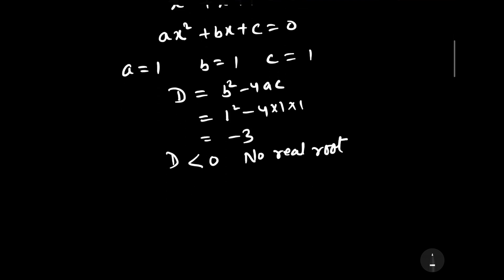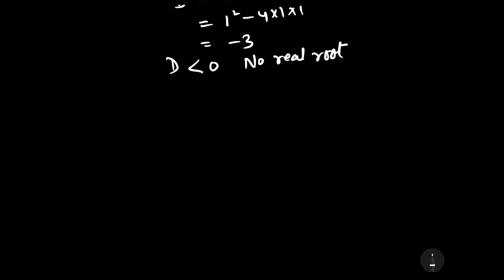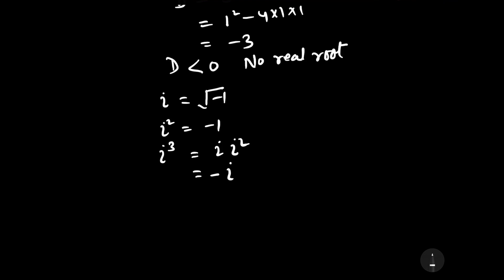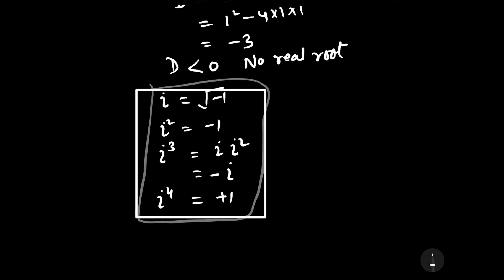To find the complex roots, we should first know the value of iota. Iota is defined as the square root of minus 1, and iota squared equals minus 1. Iota cubed equals iota squared times iota, which equals minus iota. And iota to the power 4 equals plus 1. These are the properties we will use in calculating the complex roots.